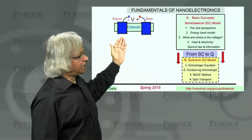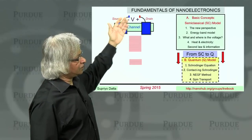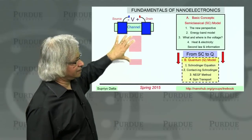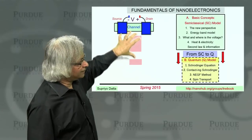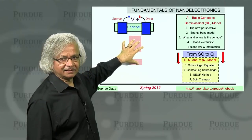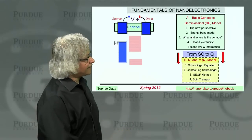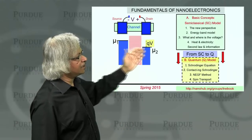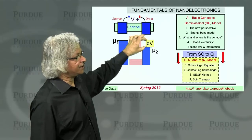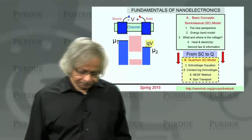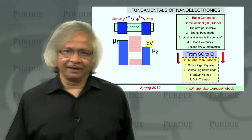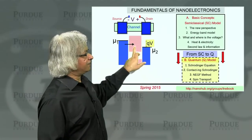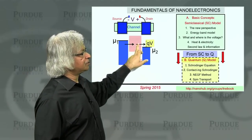As you remember, we started by saying that if you want to understand current flow through a device, the first thing is to have a model for the density of states inside the channel. The next step is to locate the electrochemical potentials in the two contacts, which are separated by the applied voltage. Why does current flow? Because the left contact wants to fill up these levels, and the right contact wants to empty them.